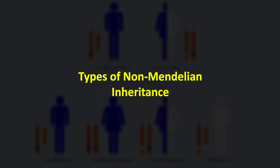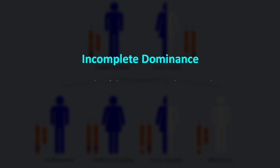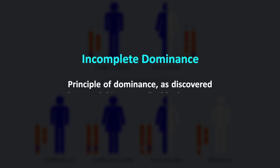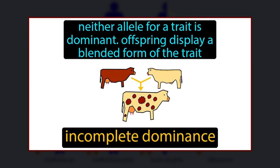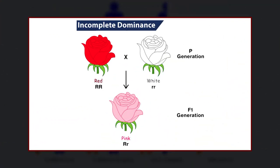Let's discuss the types of non-Mendelian inheritance. First, incomplete dominance. In this type, the principle of dominance as discovered by Mendel is not applicable; however, the principle of uniformity is seen. In incomplete dominance, the genetic traits mix, producing an intermediate phenotype in terms of physical traits. The pink rose is a great example, in which the white and red varieties of rose are hybridized and the resulting offspring is a pink rose.